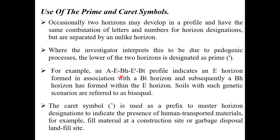Whenever an investigator interprets and this type of condition prevails, the lower of the two horizons is designated with the prime symbol. For example, you know what Ap, E, Bt, Bh are. If E is an origin formed with the association of Bt due to leachings, and subsequently Bh also has an E horizon - such genetic scenarios are referred to as 'bicyclic'. When you find the same profile development with same letters but separated by unlike origin, we use the prime symbol.